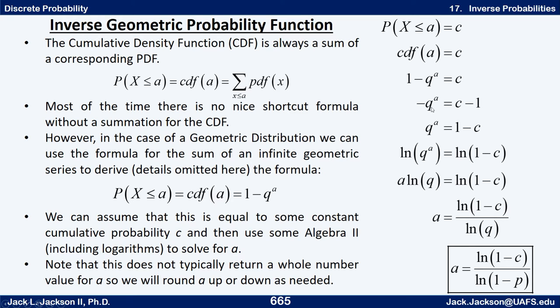Now notice the order of operations here. This says take q to the a power first, then take the opposite of that. It's not negative q to the a, but the opposite of q to the a. The q to the a is first. So to get rid of that negative we just multiply by negative 1, turns that positive. Then on the right side that makes negative C plus 1, which we can rewrite as 1 minus C.